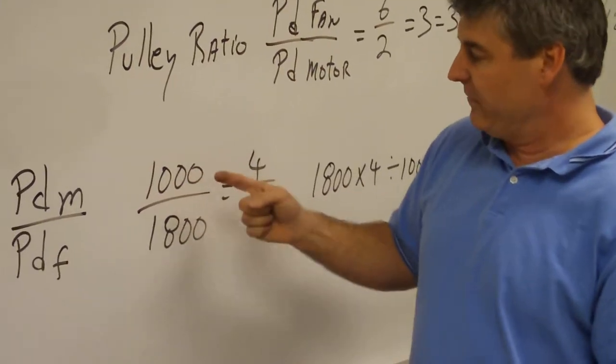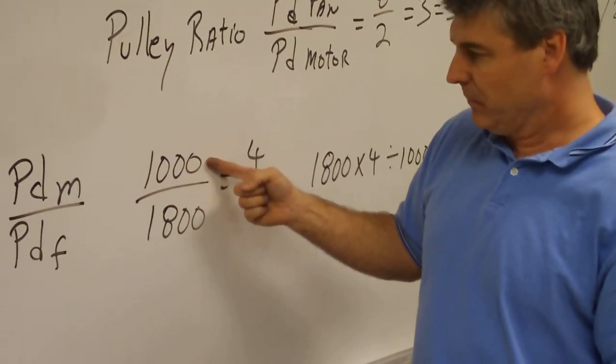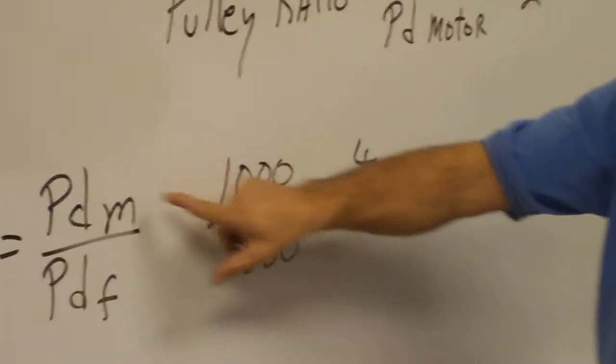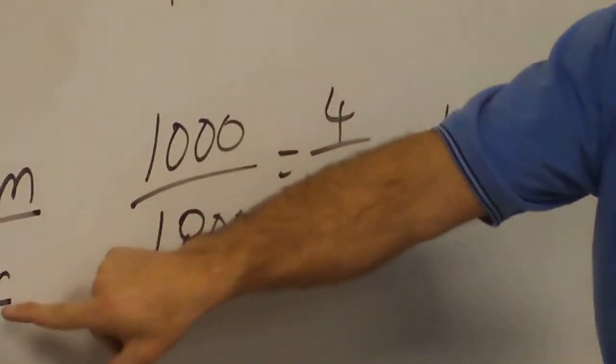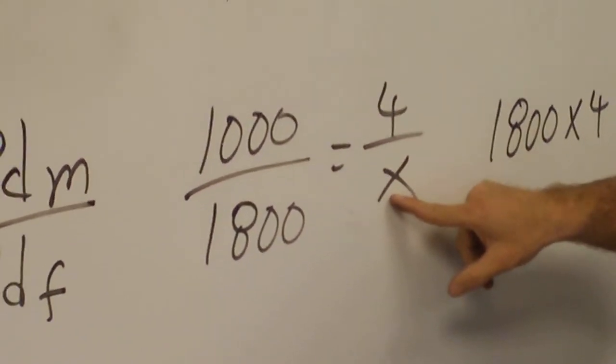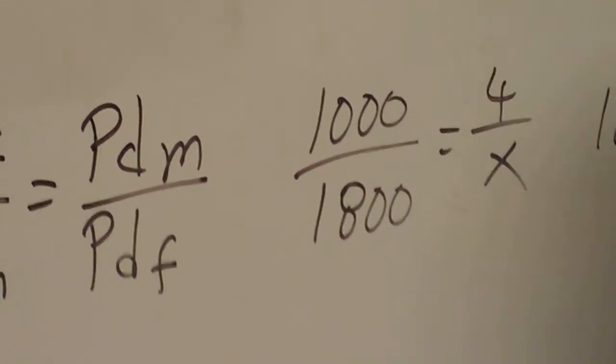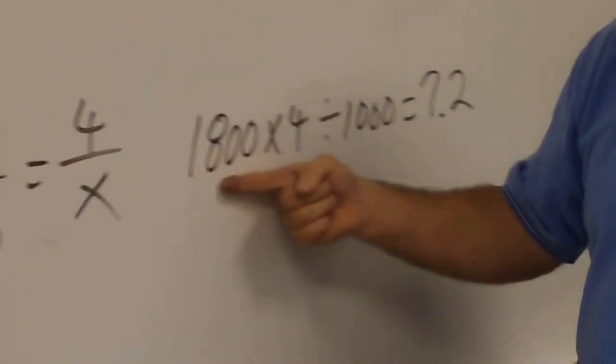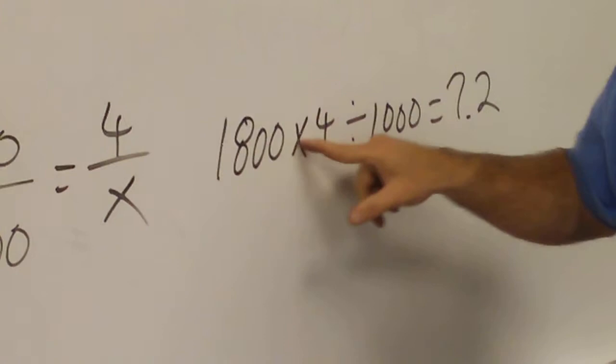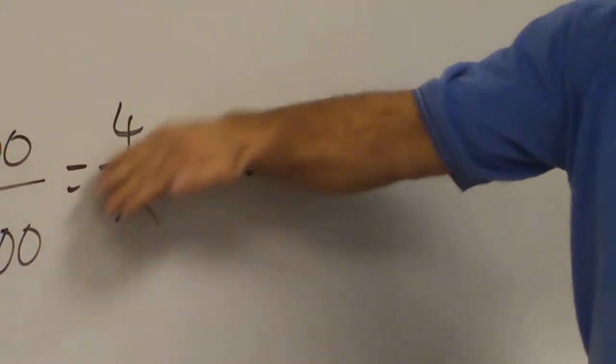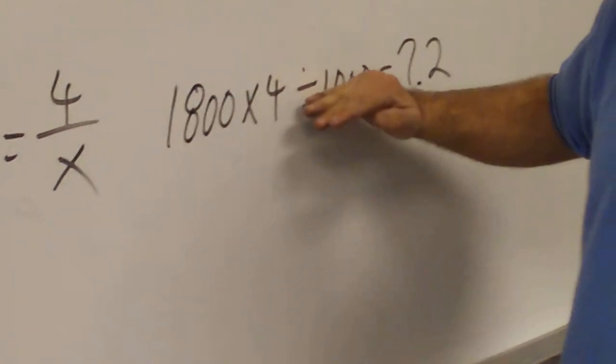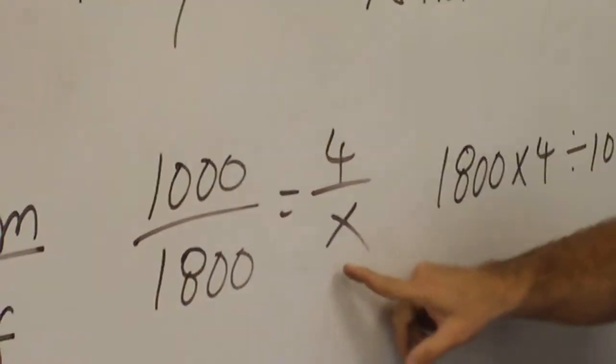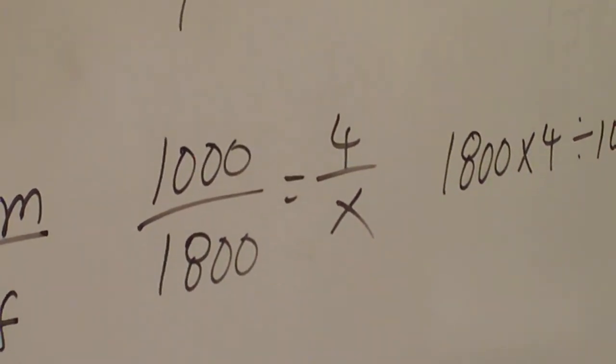Using an example, if we've got an RPM of a fan of a thousand and the RPM of the motor is eighteen hundred, and we know the pitch diameter of the motor is four but we don't know the pitch diameter of the fan, we put an X here. So all we're going to do is cross multiply and divide to find out what that pitch diameter of the fan is. Eighteen hundred times four divided by a thousand is going to give us seven point two. So that would be the pitch diameter of the fan.